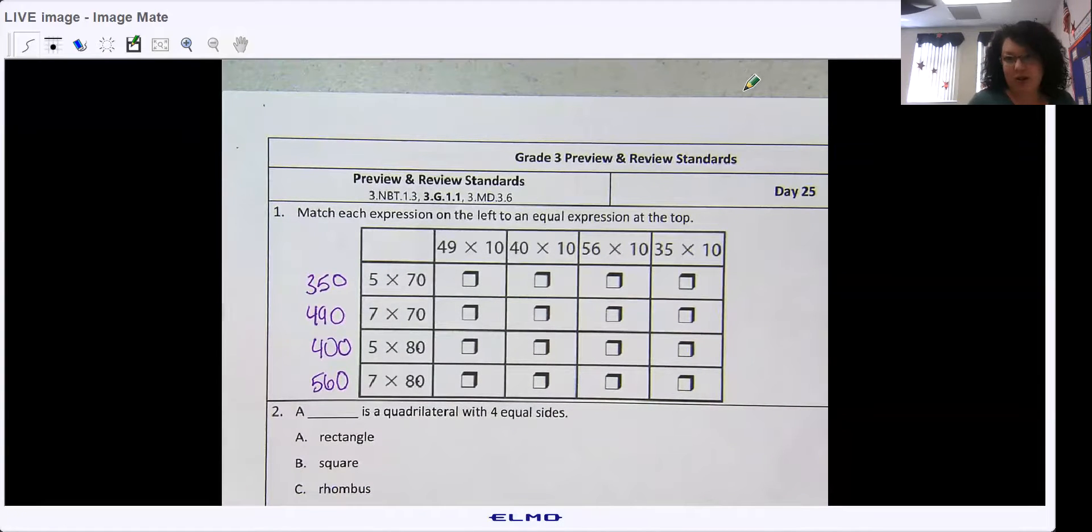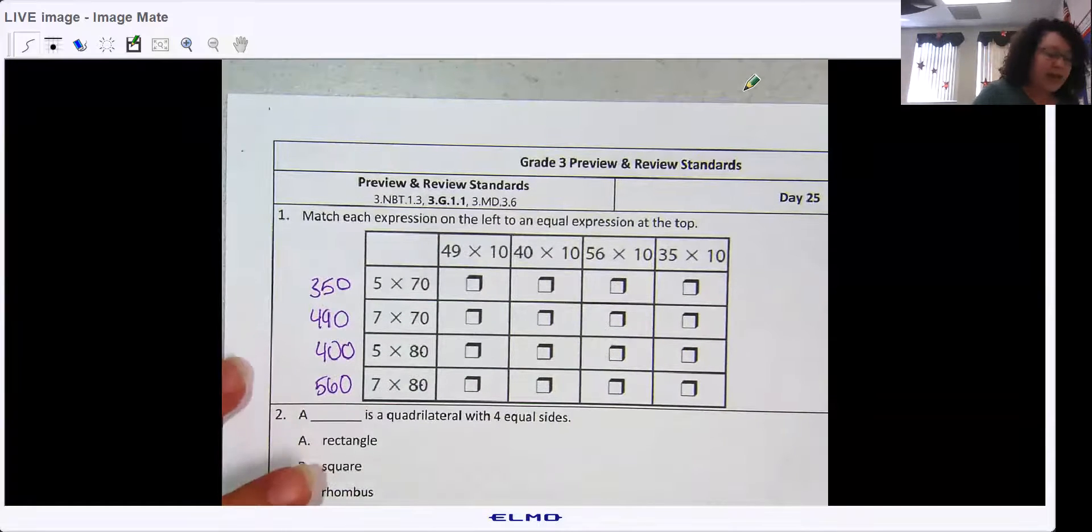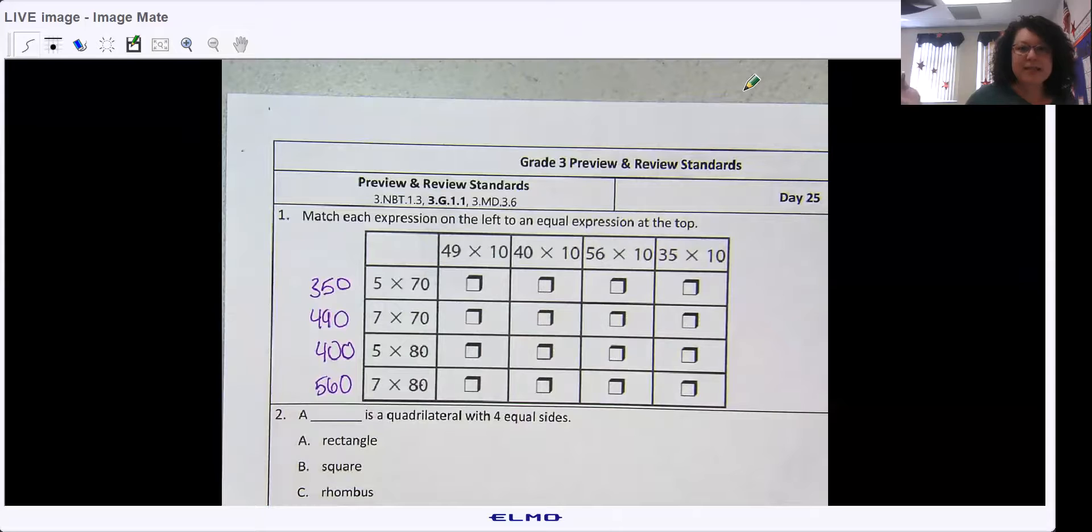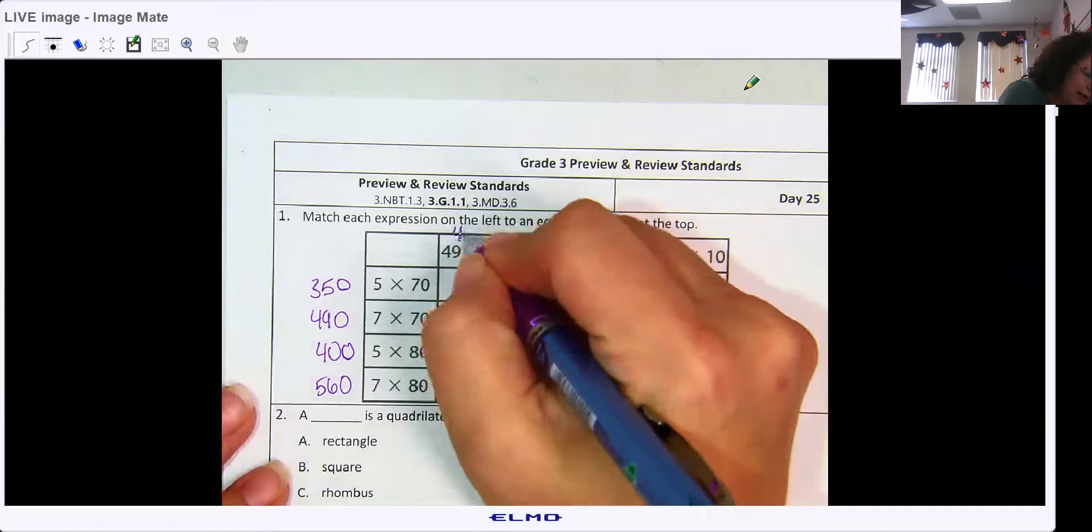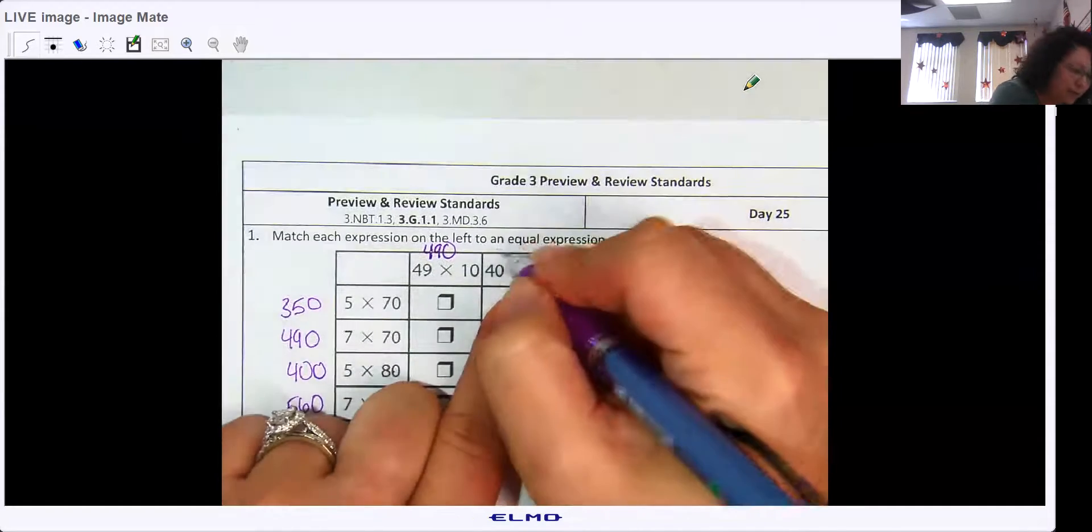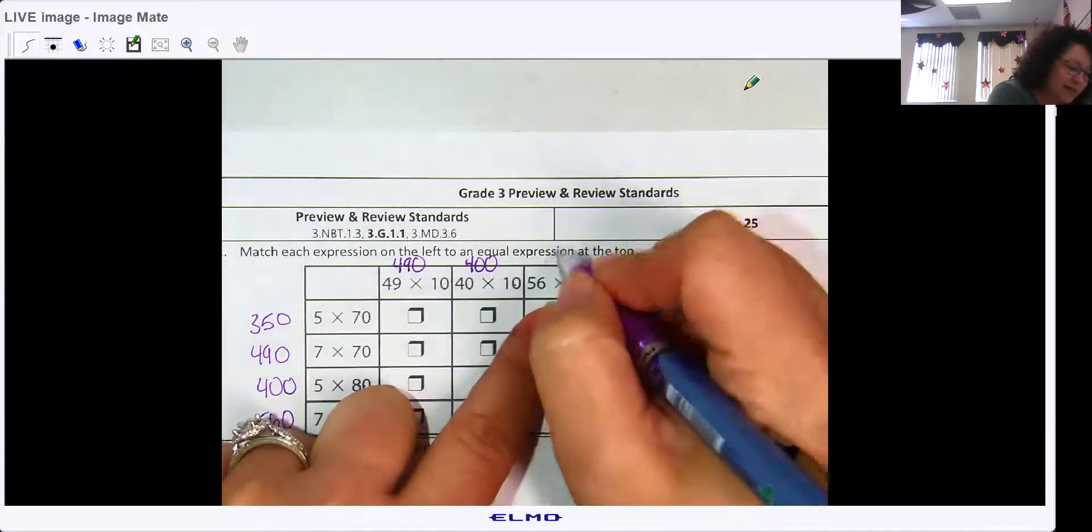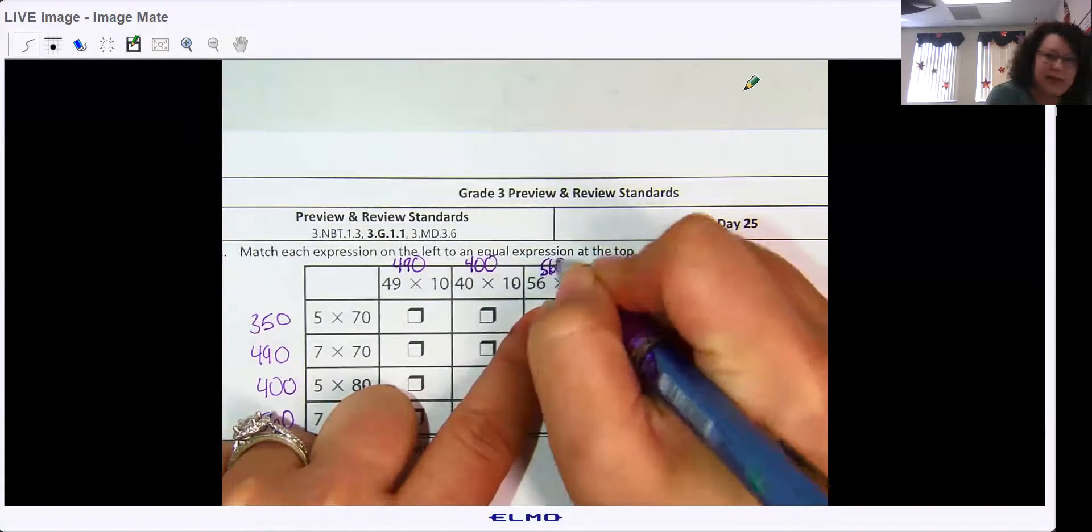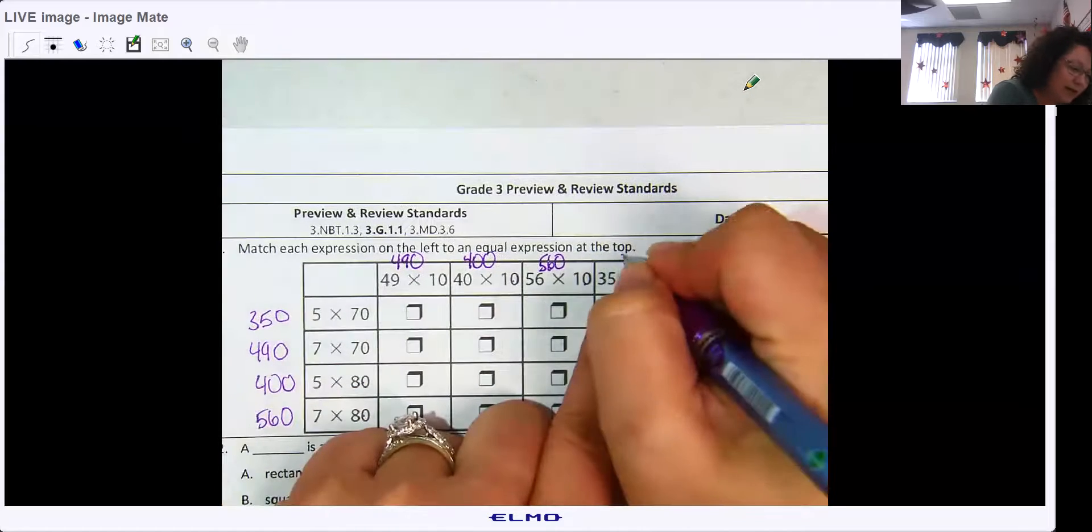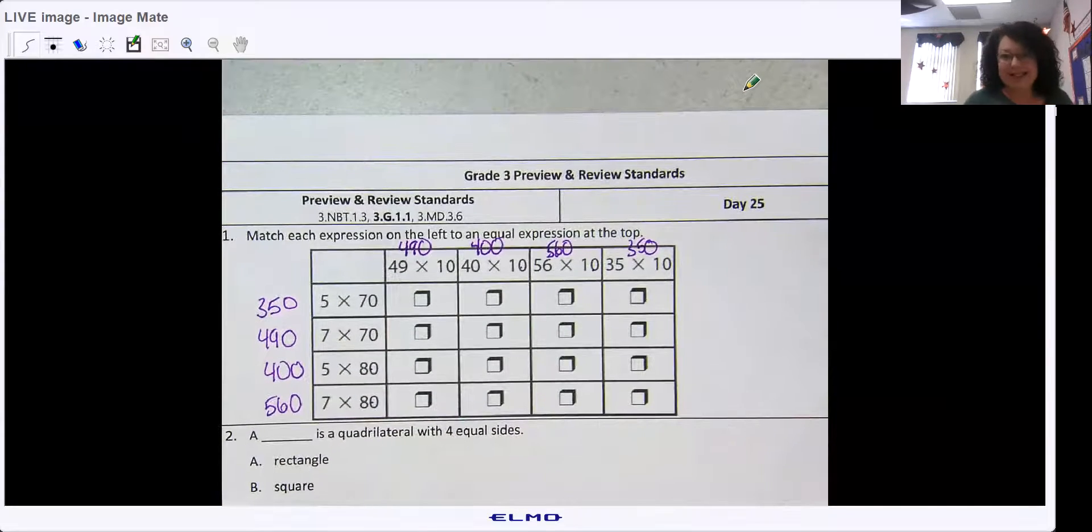Because you don't get a number chart or a multiplication chart. Okay, so I'll do the same thing up top. 49 times 10, anything times 10, you just add the zero. 49, add my zero. 40 times 10, 40, add my zero. 56, add my zero. And 35, add my zero. All right, see that didn't take long at all.